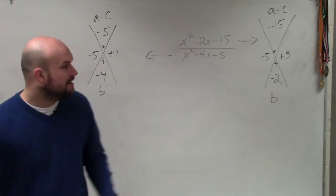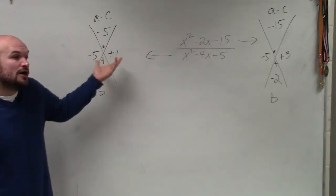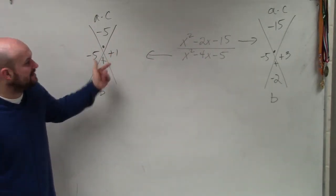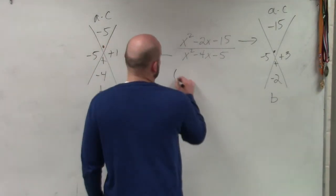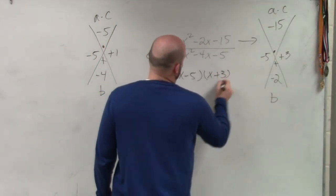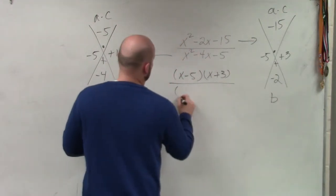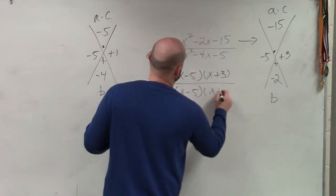Yes? Maybe so? OK. So now, remember, these are your factors. These are a part of your factors. So therefore, I can write this as x minus 5 times x plus 3 divided by x minus 5 over x plus 1.